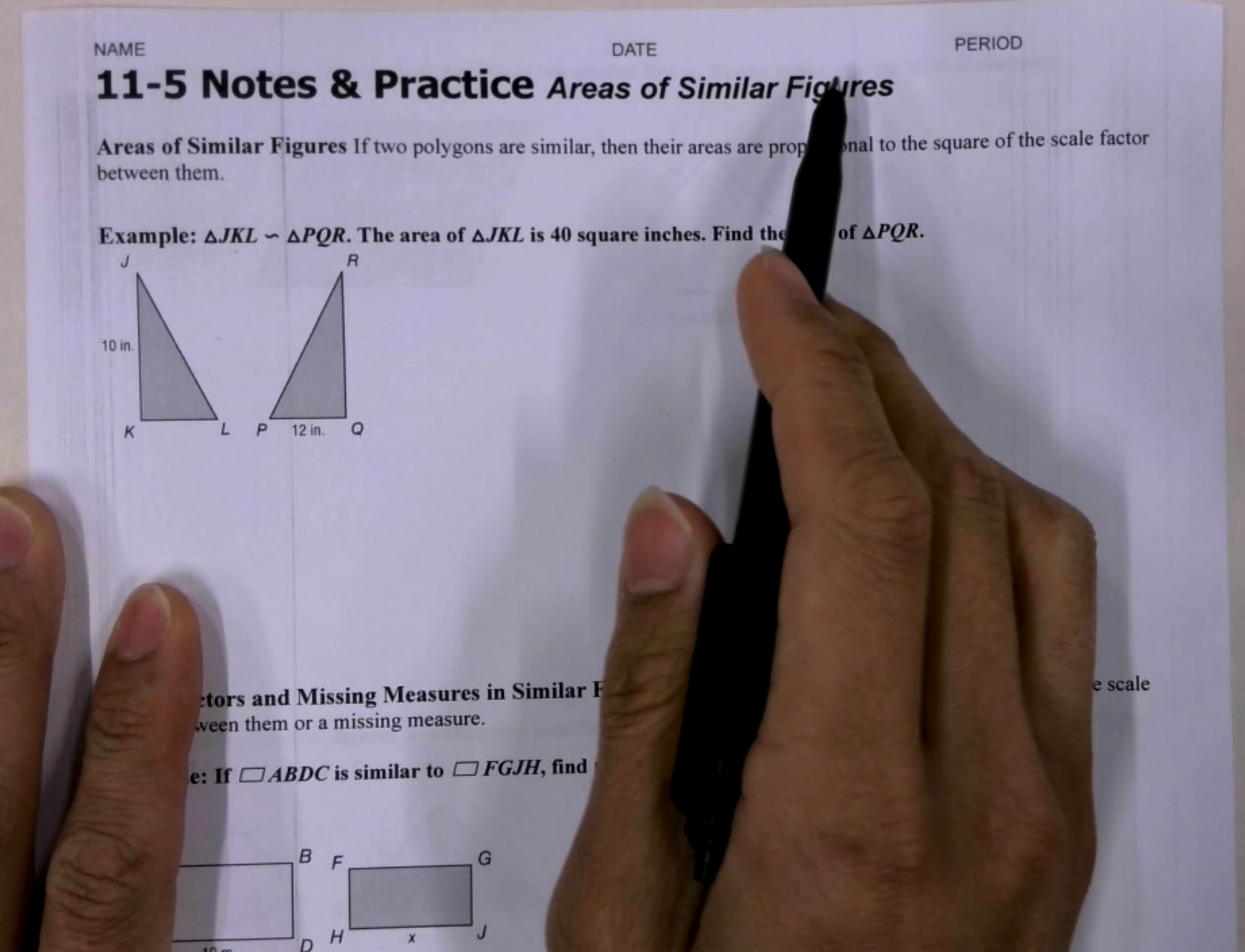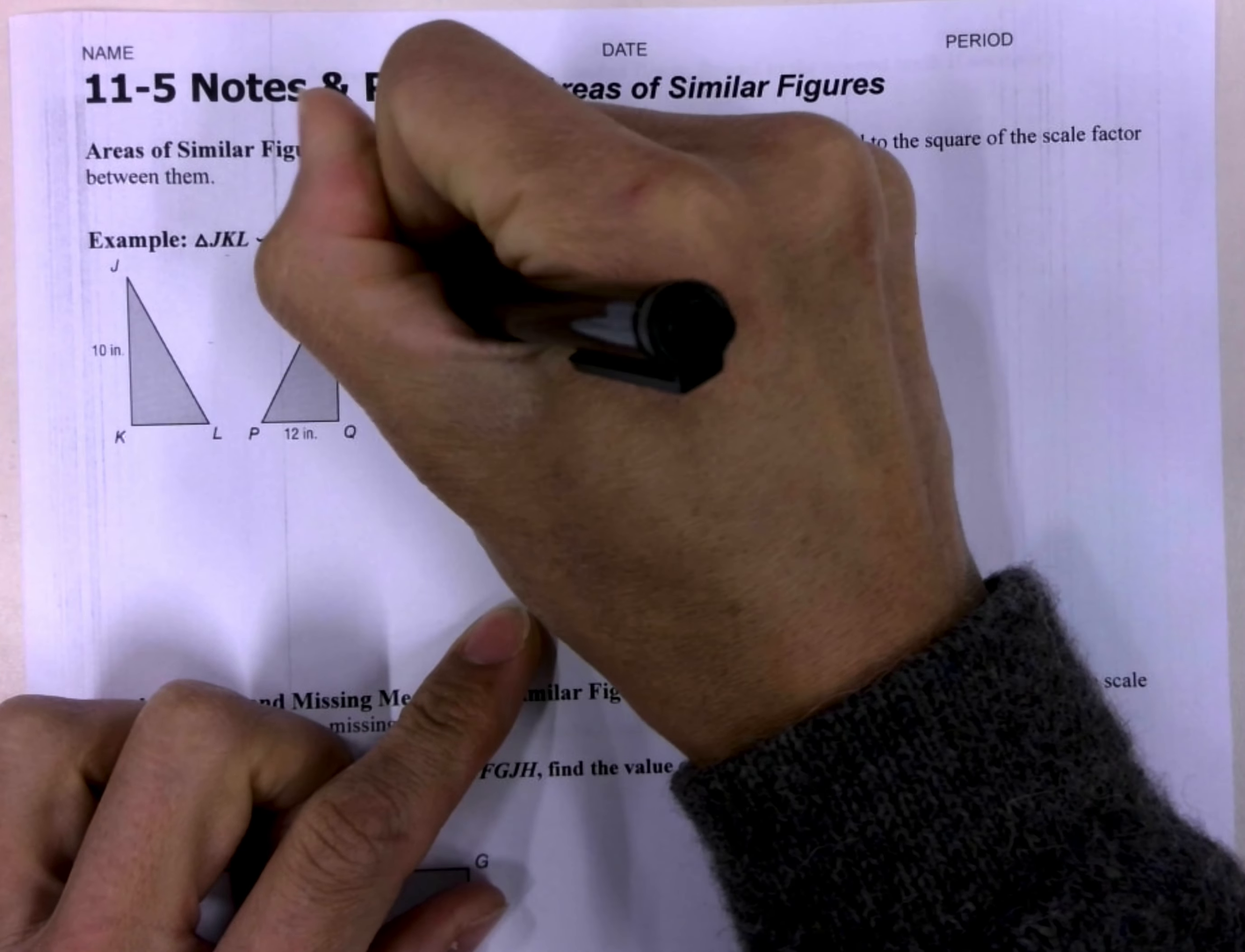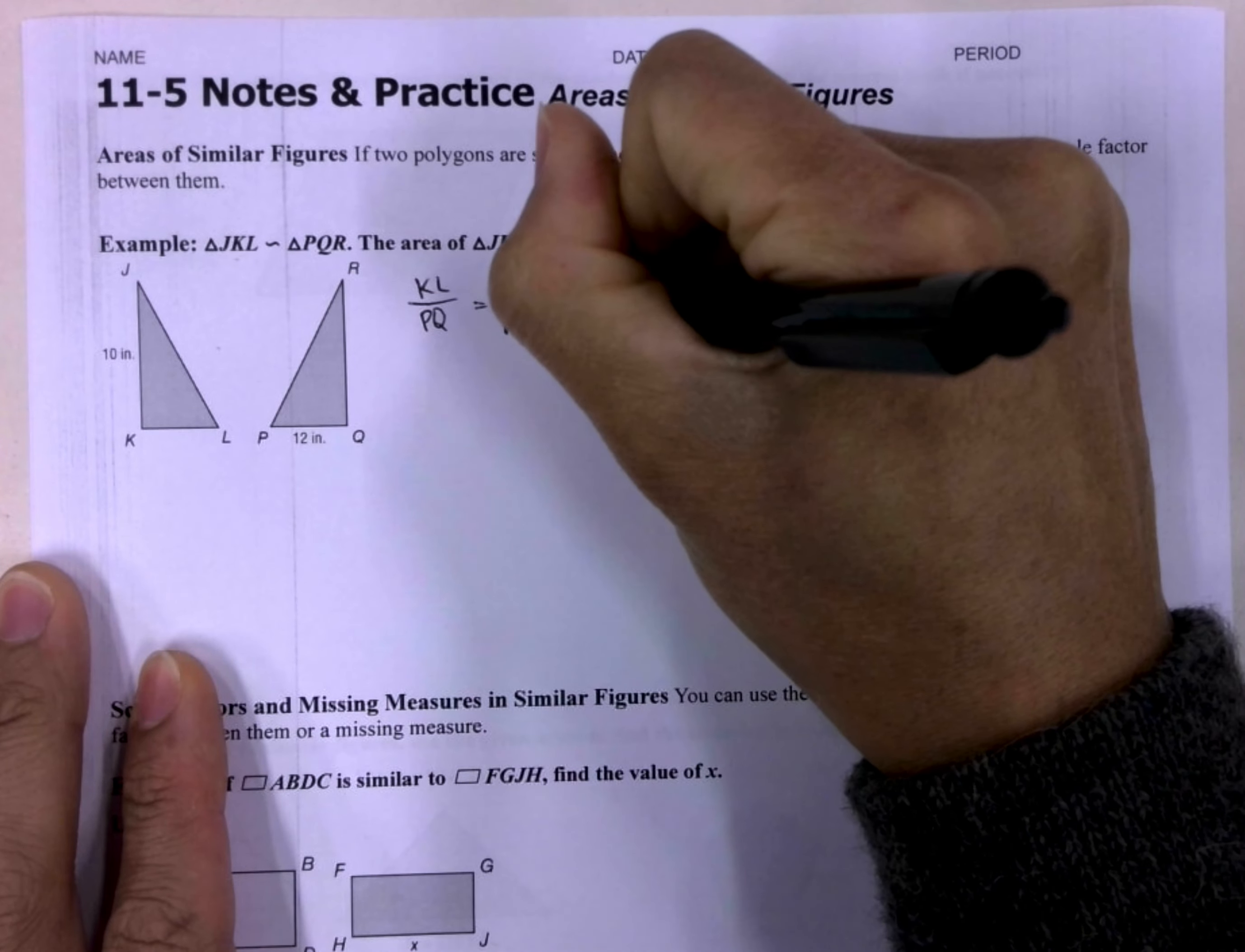So what does it mean to be similar? It means that the corresponding sides have the same ratio. This was something that we went over in Algebra 1. So then that means KL and PQ, well let me go ahead and write this out. This is going to be KL over PQ, the ratio between those corresponding sides is equal to the ratio of JK over RQ. And then that's equal to the ratio of the hypotenuse, so it's going to be JL over RP.